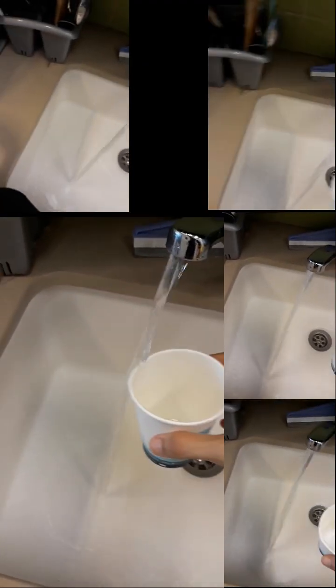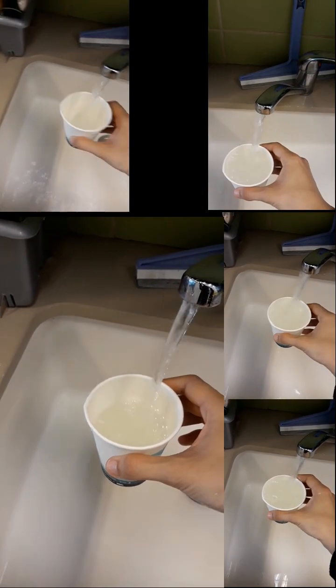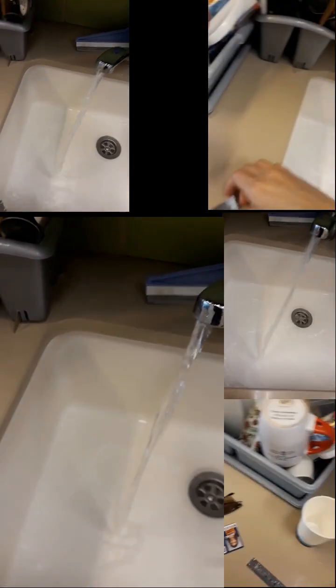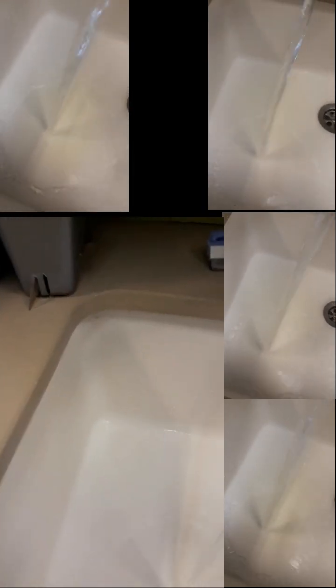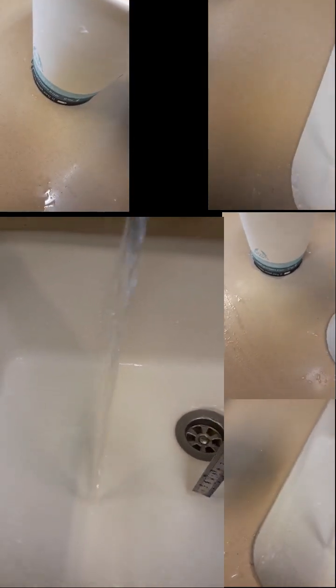We set up our experiment in a sink using a flat surface and steady flow from the faucet. We first calibrated the flow rate by measuring how much water came out over time at each faucet setting. Then we recorded the hydraulic jump at different flow rates and carefully measured the height before and after the jump using a ruler.